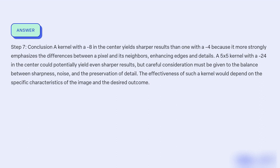Step 7: Conclusion. A kernel with -8 in the center yields sharper results than one with -4 because it more strongly emphasizes the differences between a pixel and its neighbors, enhancing edges and details. A 5x5 kernel with -24 in the center could potentially yield even sharper results, but careful consideration must be given to the balance between sharpness, noise, and the preservation of detail. The effectiveness of such a kernel would depend on the specific characteristics of the image and the desired outcome.